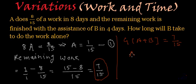From here we will get A plus B is equal to 7 by 15 multiplied by 4. This is equal to 7 by 60. Right? Yes.